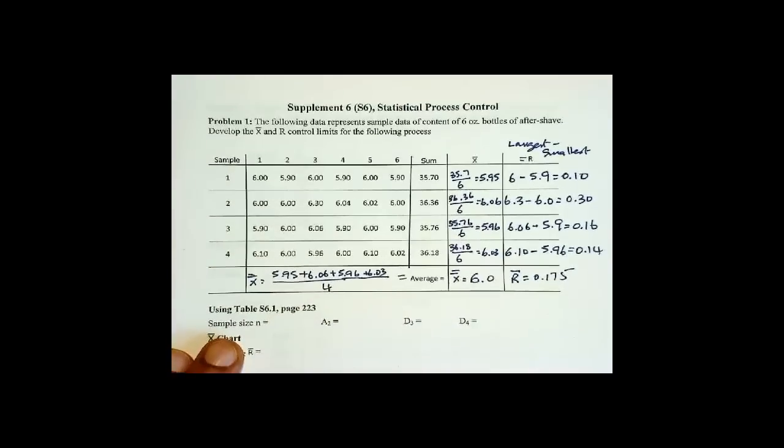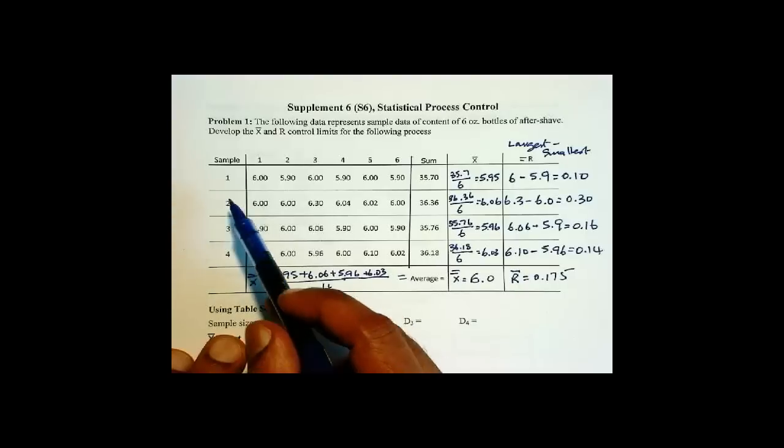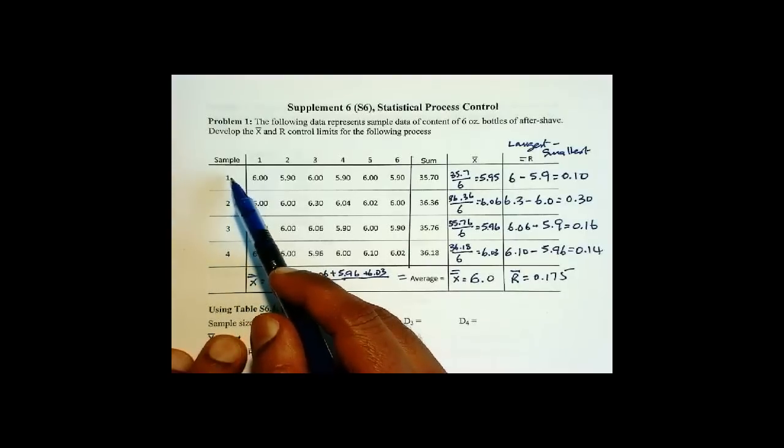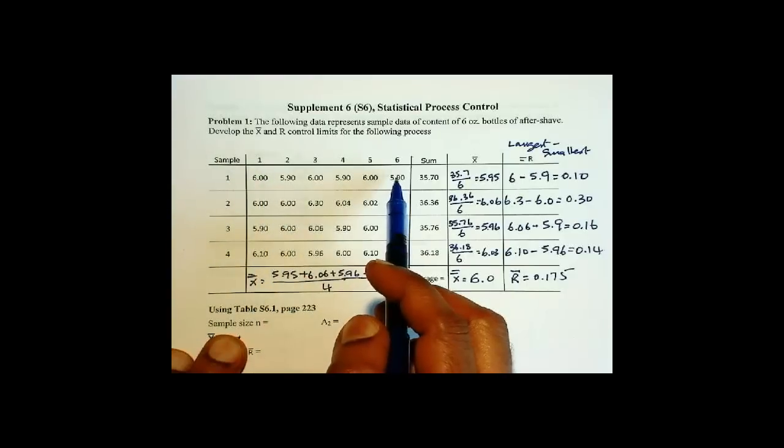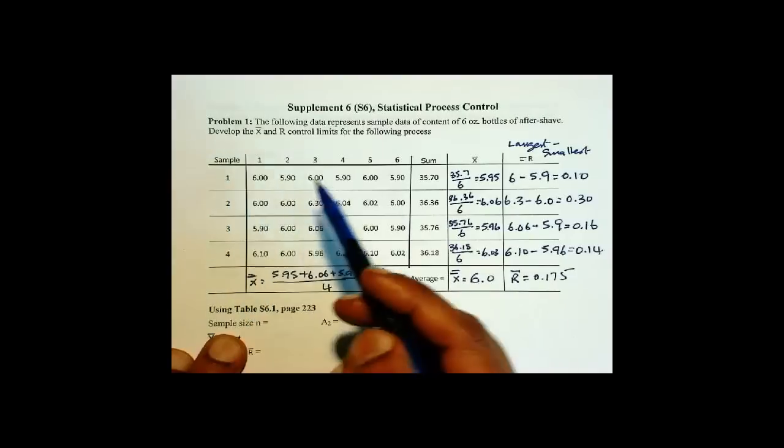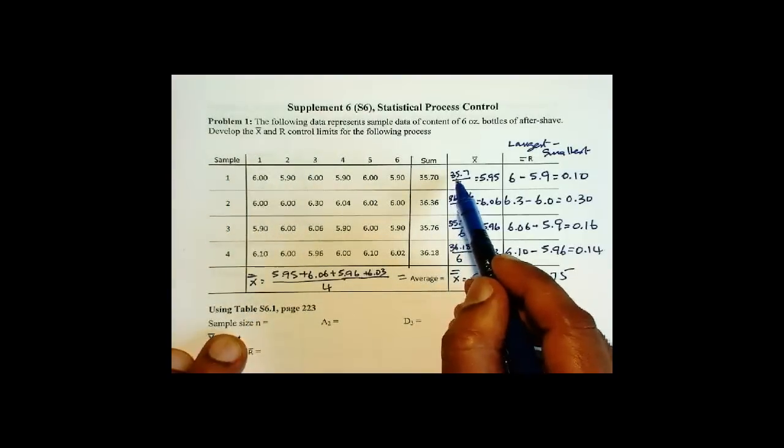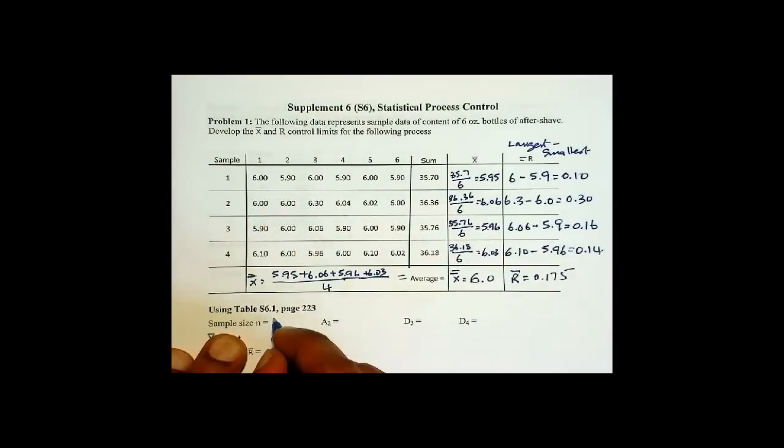Now sample size. This is one thing that students must be very careful about. You need to distinguish between number of samples and sample size. Sample size is how many observations are collected from each sample. In other words, to find x-bar value, what do you divide the sum by? Which is 6. So sample size is 6.